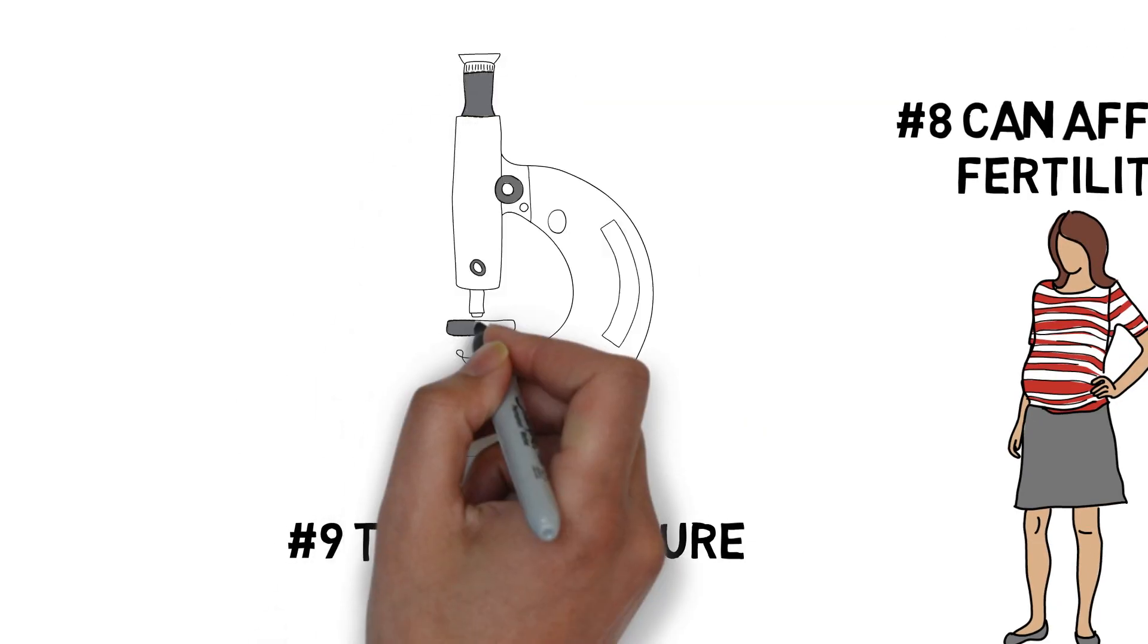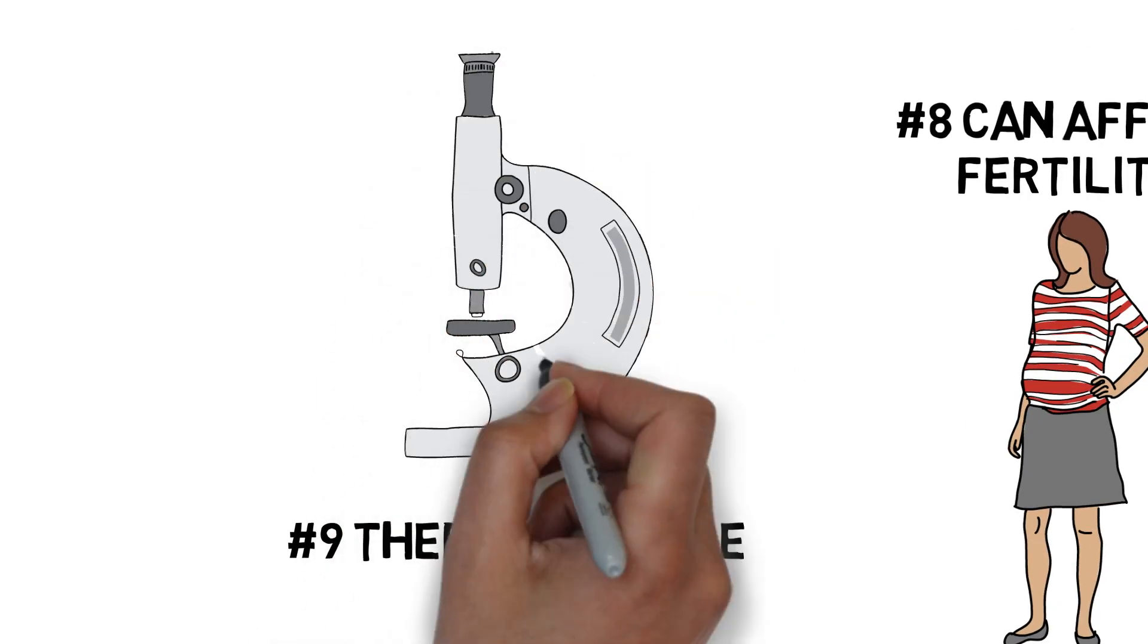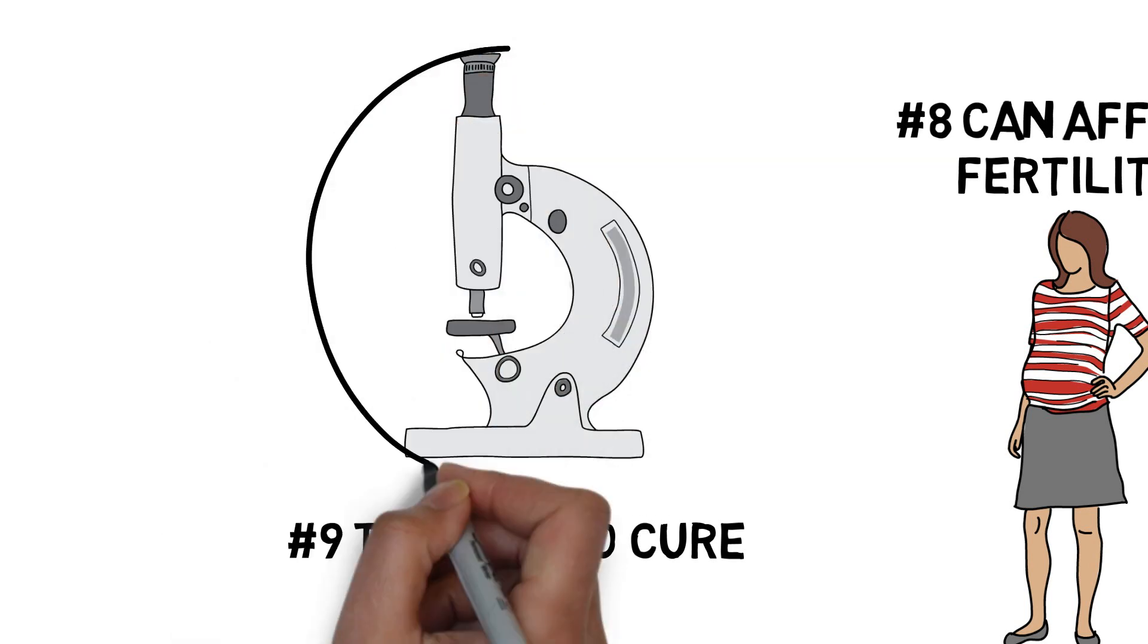Number 9. There is currently no cure to cystic fibrosis. Fortunately, there are treatments that can alleviate symptoms and pain, but people born with cystic fibrosis have it for life.